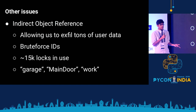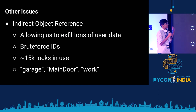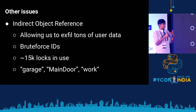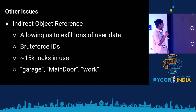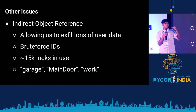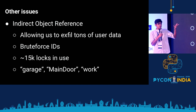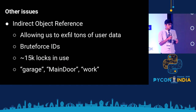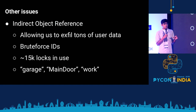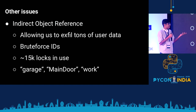To highlight a couple of other issues we saw during our research: we found an IDOR bug — indirect object reference — which allowed us to exfiltrate tons of user data. We found one endpoint which served profile photos of a large number of users, which is pretty scary. When we started brute-forcing user IDs incrementally, we were able to access the user data of every other user on the platform. We scripted this and found around 15,000 active locks in use — locks called 'garage', 'main door', 'work', and others. People out there are actually using this product without any knowledge of how insecure it is.